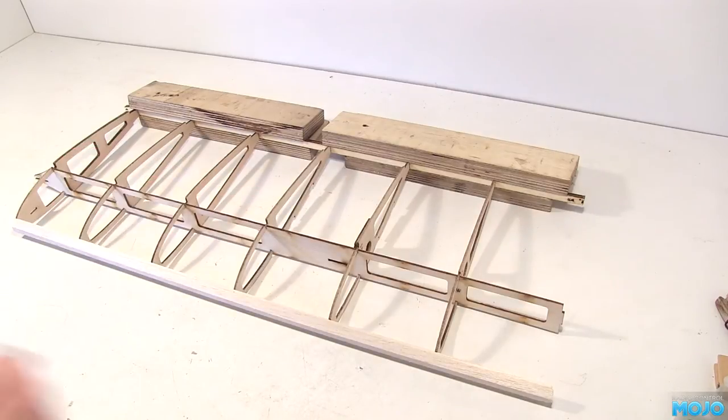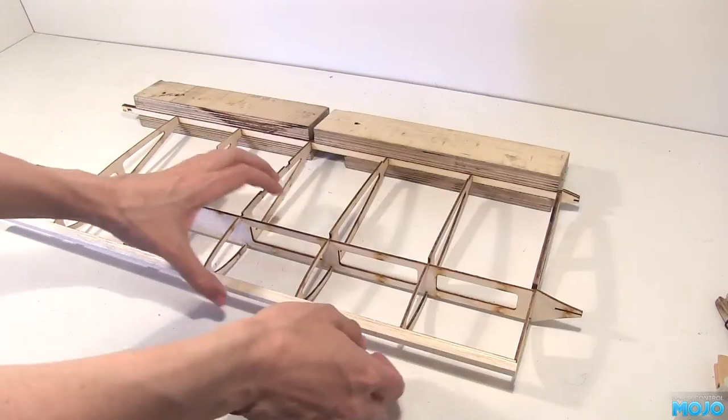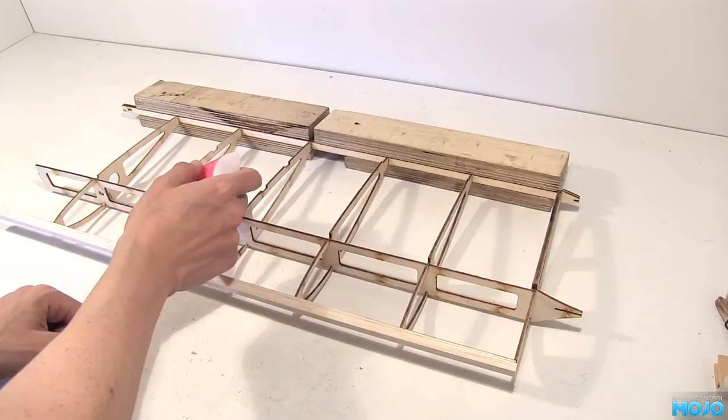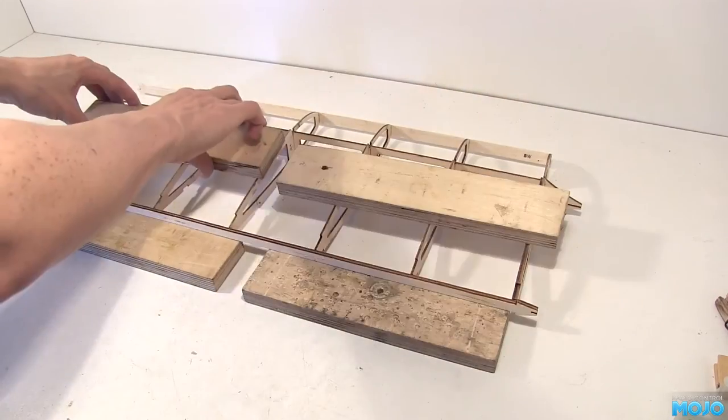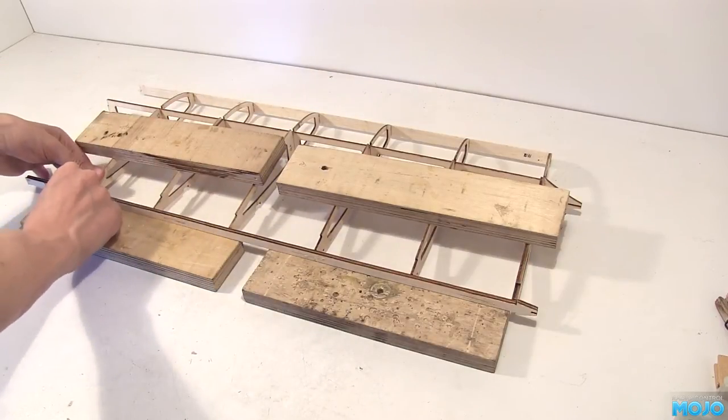You only need a drop. It will run down and soak in all by itself. Give that a minute or two to dry and lift it up. Flip it over, block it up again, make sure it's still all nice and straight, and pop a drop of thin CA on the bottom joints.